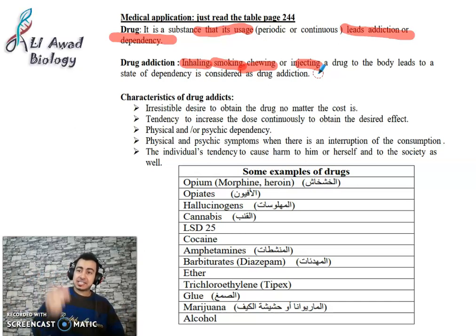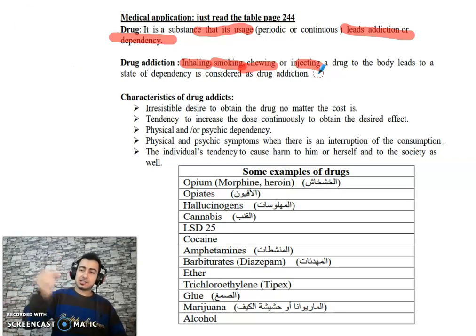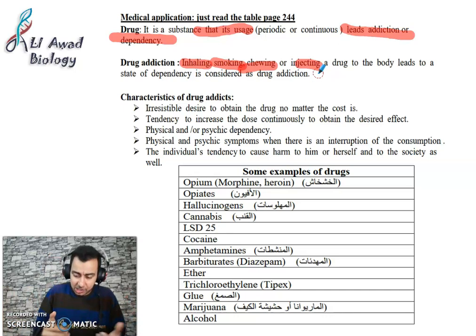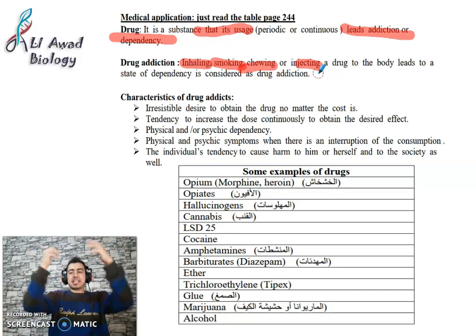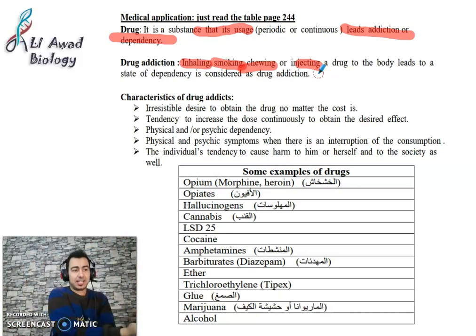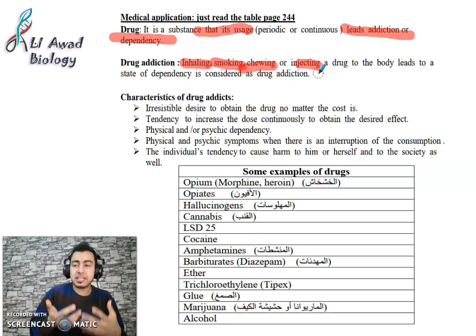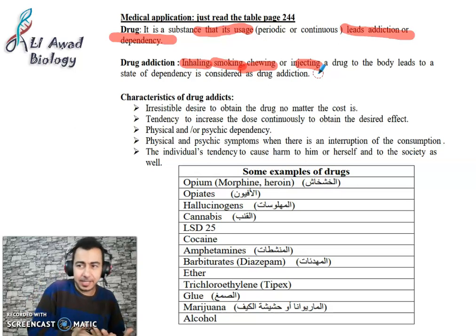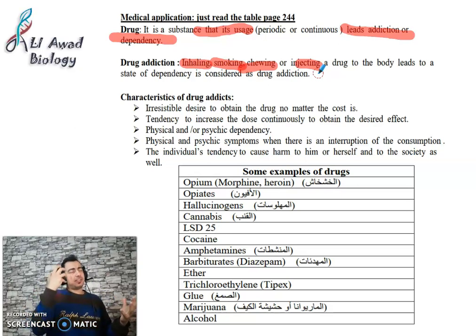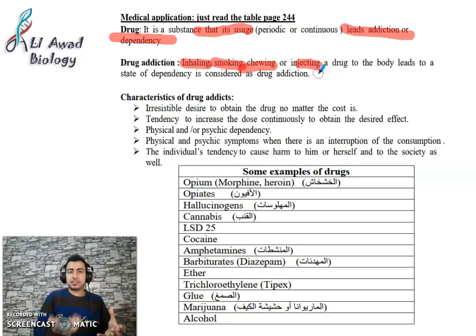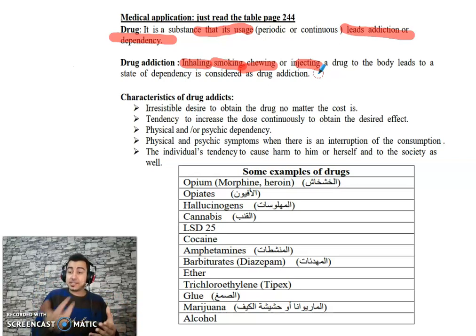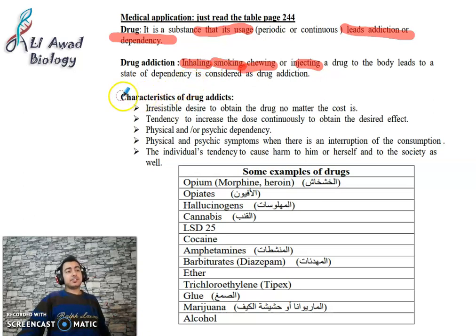The body becomes attached to the substance, and this is called drug addiction. Addiction, as a definition, is a state of dependency on the drug (حالة من الاعتماد على المخدرات). The key rule is: when someone becomes attached to something and cannot leave it — neither physically nor psychologically — that is addiction. Now let's look at the characteristics of drug addicts (خصائص المدمن).